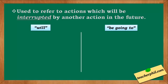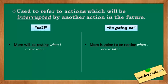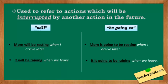The second use is to refer to actions which will be interrupted by another action in the future. Examples: 'Mom will be resting when I arrive later.' 'Mom is going to be resting when I arrive later.' 'It will be raining when we leave.' 'It is going to be raining when we leave.' The underlined parts are the future progressive actions, while 'when I arrive later' and 'when we leave' are the interruptions. We don't use future progressive with these time clauses — we simply use simple present.